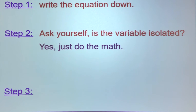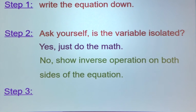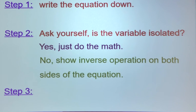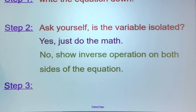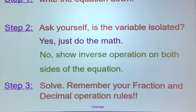If you answered no to 'is the variable isolated,' we need to show the inverse operation on both sides of the equation. We've talked about why it's important to do it on both sides — to keep it balanced, just like a teeter-totter. If we don't do the same thing on both sides, it's no longer an equation; it becomes an inequality.